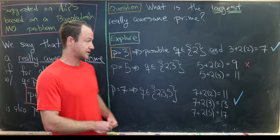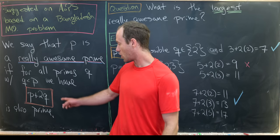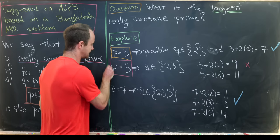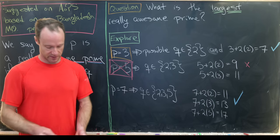Whereas 5 plus 2 times 3 is 11, which is prime. But remember, these always have to be prime in order to be a really awesome prime. So that means that p equals 5 is not a really awesome prime.